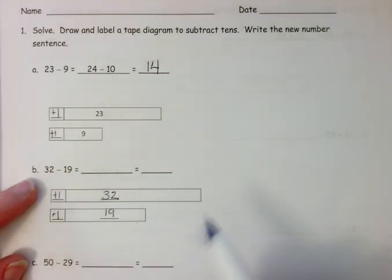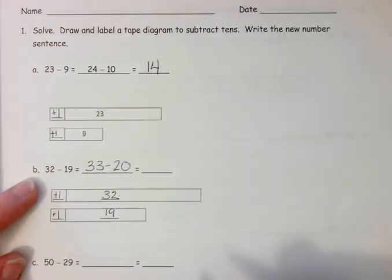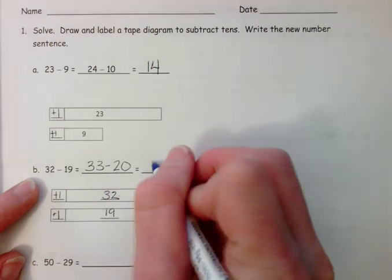So 32 minus 19 is the same as 33 minus 20. So 33 minus 20 is 13.